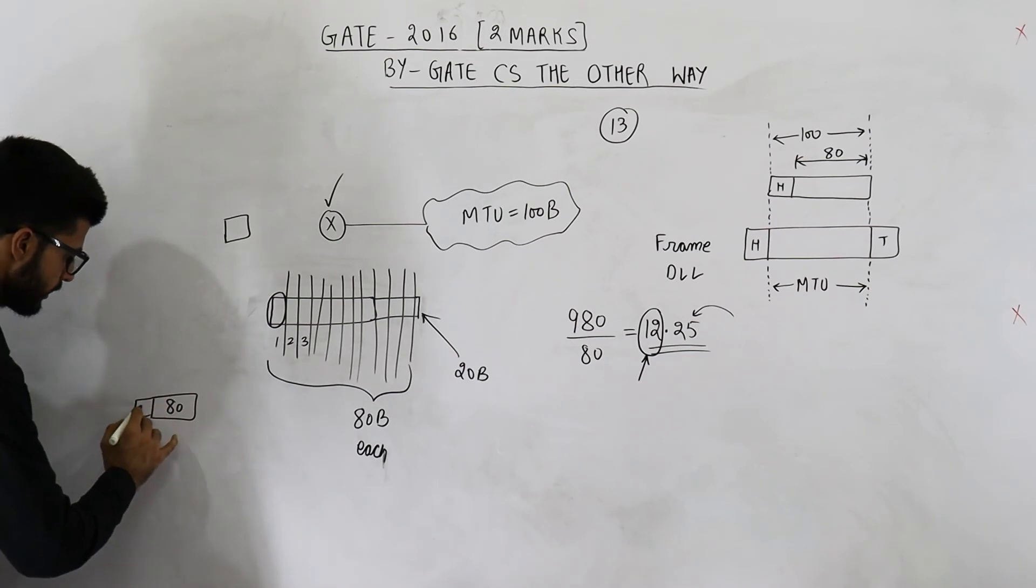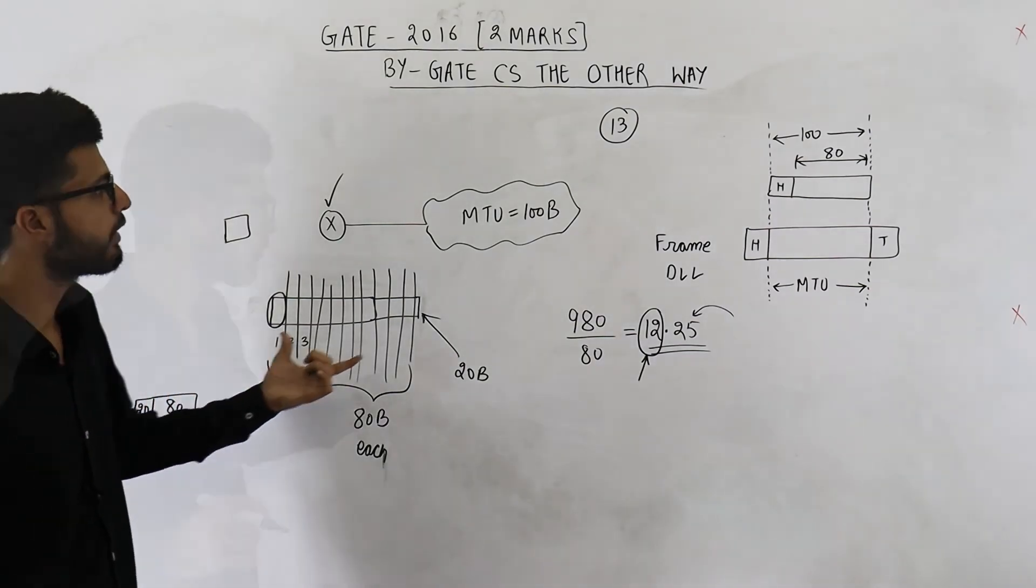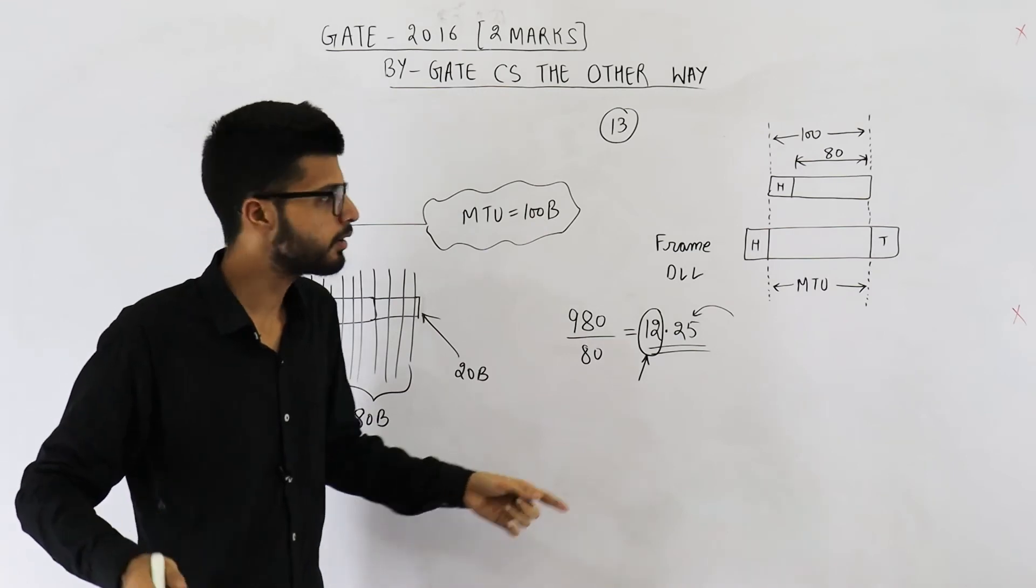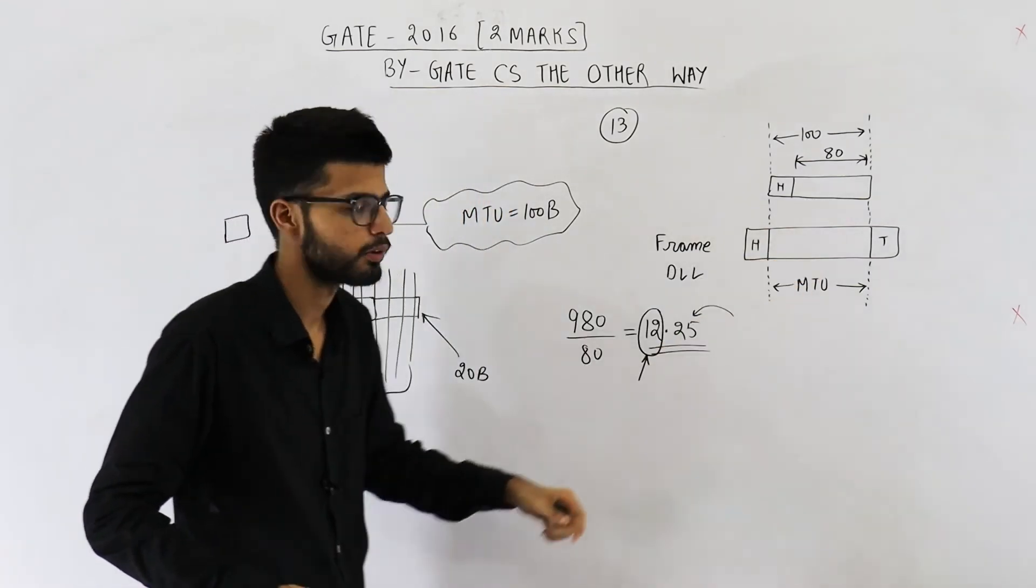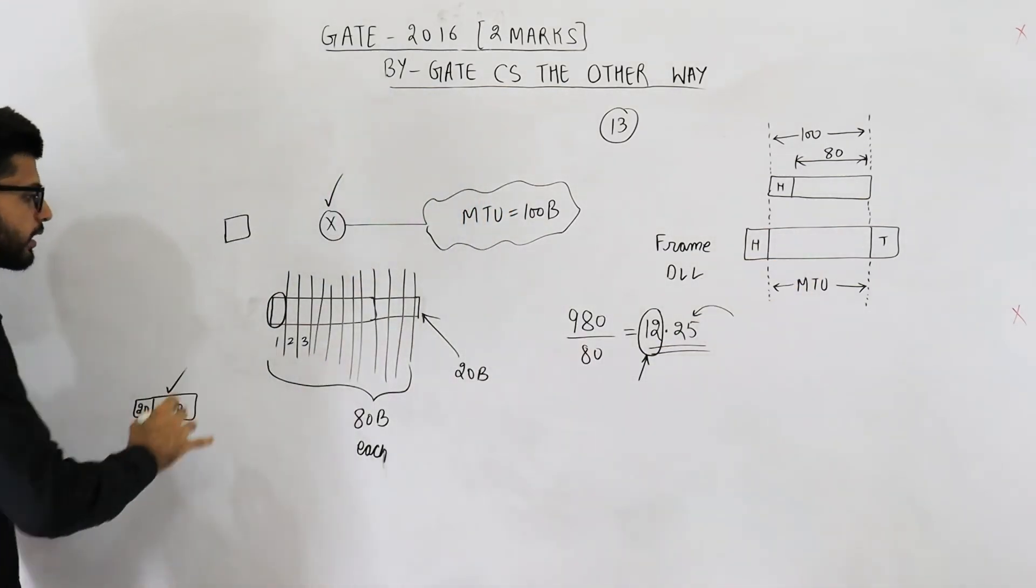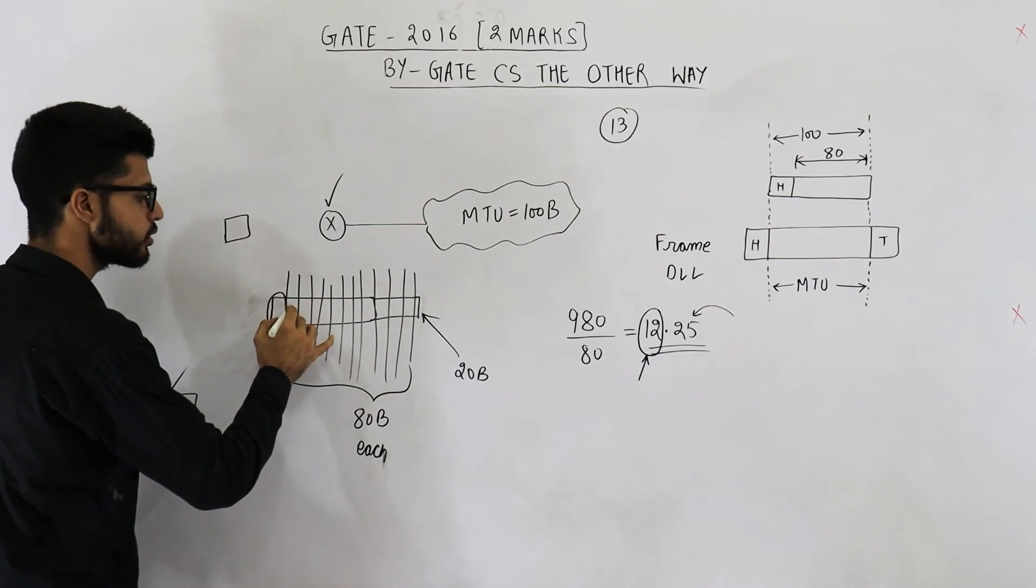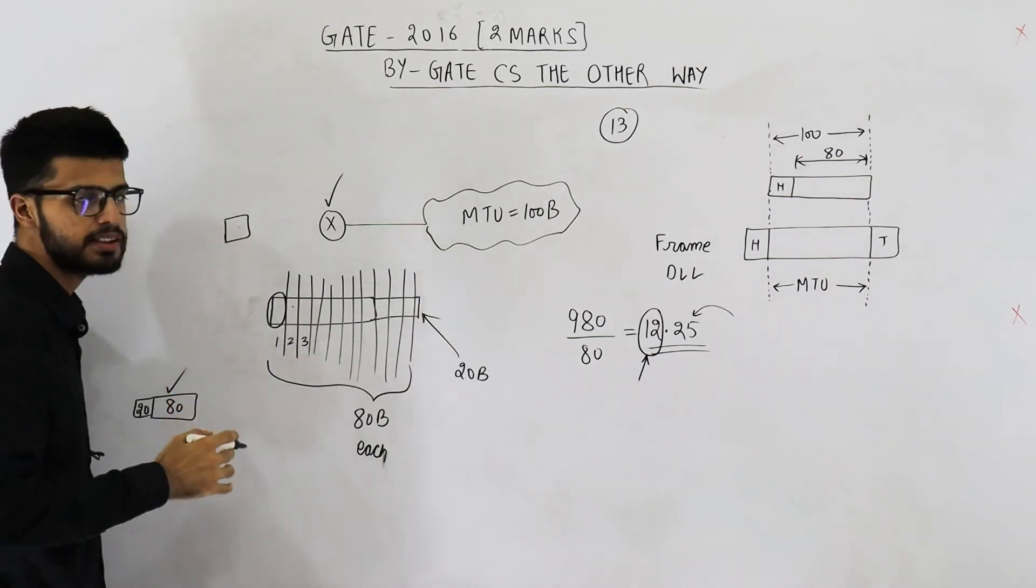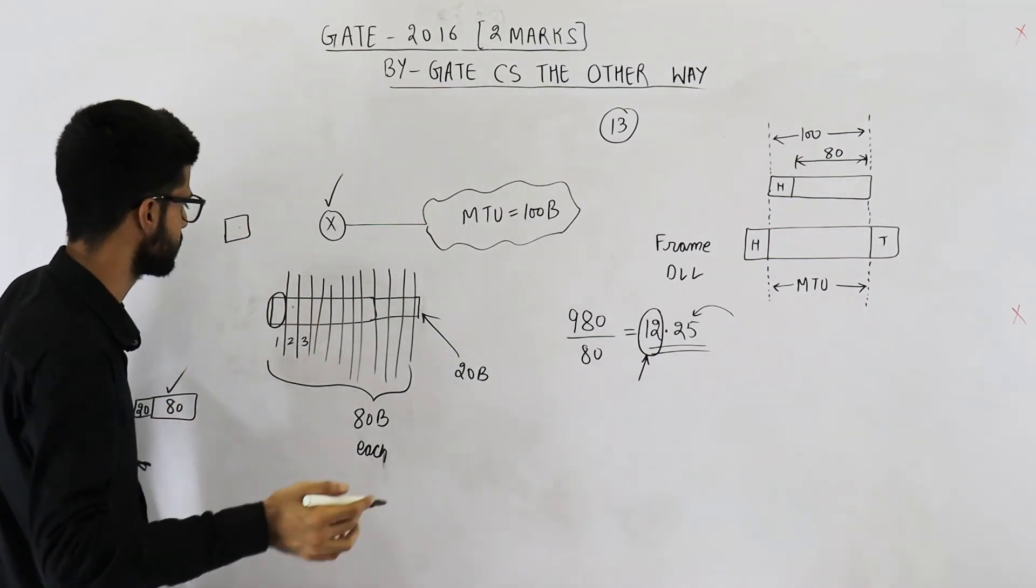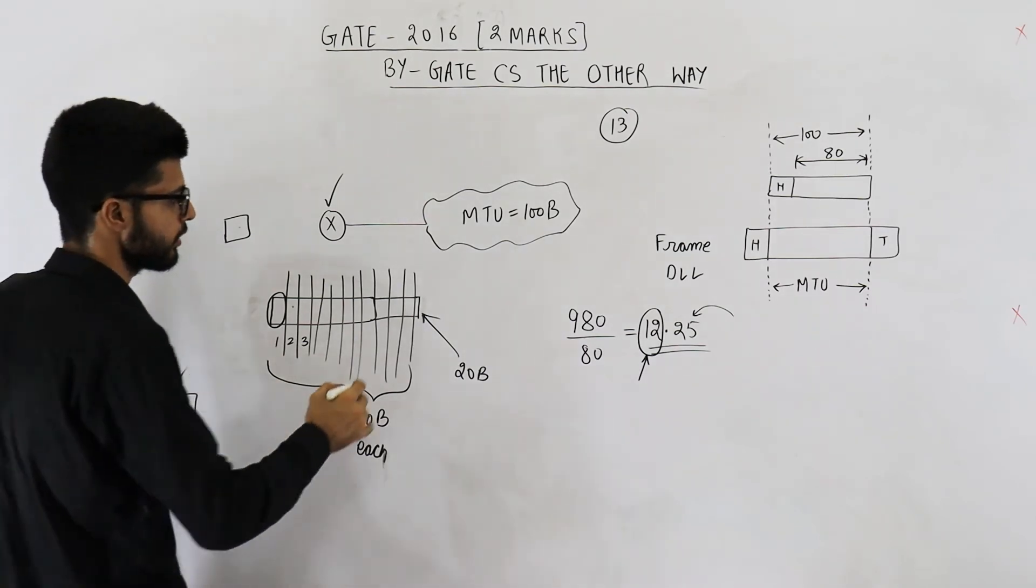So this is 80 plus 20, 100 bytes and you very well know 100 bytes can easily go in one data link layer frame. So first fragment is sent. Similarly, second fragment is of 80 bytes plus 20 bytes header that is 100 bytes. So that one will also be sent. And so on, all of these 12 fragments will be sent.